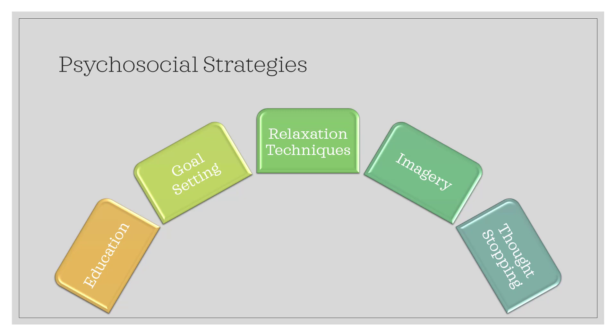Implementing coping strategies to reduce stress. Common techniques include relaxation, positive self-talk, and thought stoppage. Social support and positive affirmations can also help support an individual. Social support may include family, friends, significant others, coaches, teammates, counselors, and even athletic trainers.